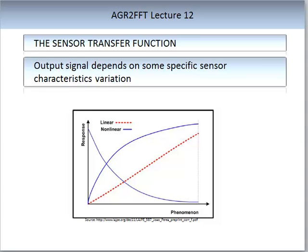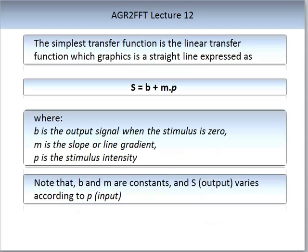The simplest transfer function is the linear transfer function, graphed as a straight line and expressed as S = b + m × P, where b is the output signal where the stimulus is zero, m is the slope or gradient, and P is the stimulus intensity. Note that b and m are constants, and the S output varies according to the P input. This is a simple mathematical formula demonstrating the relationship of a straight-line graph.